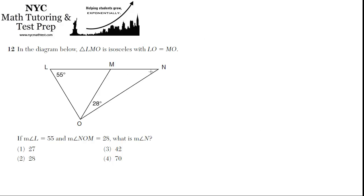So we're looking for angle N. First they tell us LMO is isosceles. Isosceles means two of its sides are the same. Well, which two sides? LO equal to MO.